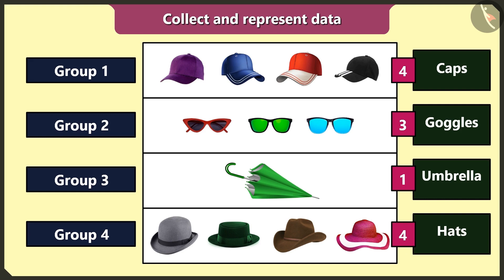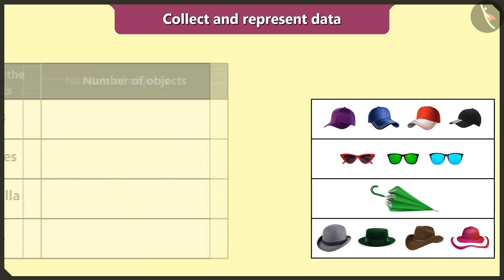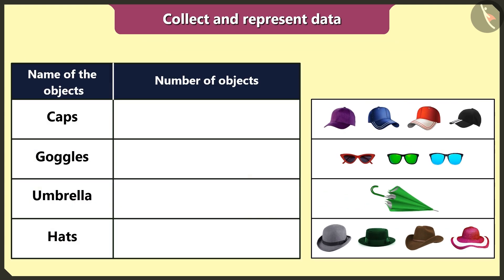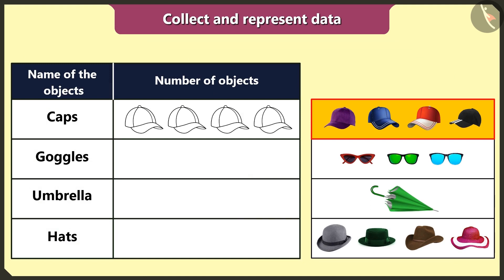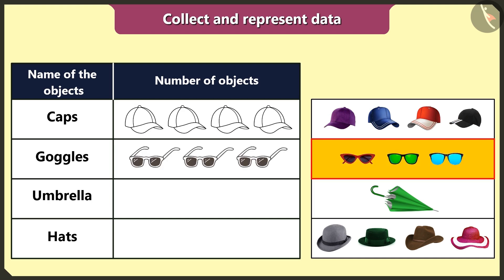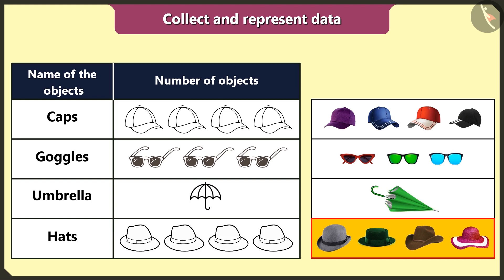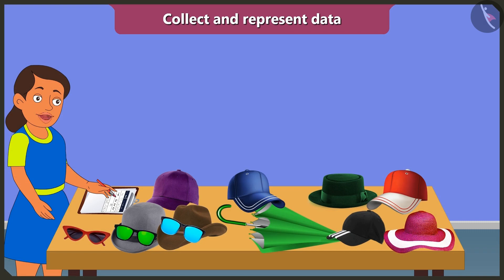Now I will create a table like this and represent all the data in it. There are four caps in the table, so I will draw four caps. There are three goggles, so I will draw three goggles. Then there is one umbrella, so I will draw a picture of an umbrella. And there are four hats, so I will draw four hats. Oh wow, it looks good.